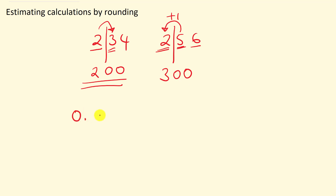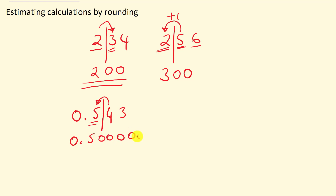Now let's look at some decimal examples. Say we have 0.543. The number starts with 0, so that is not a significant figure. Look at the next number after the decimal — we have a 5, which is our first significant figure. Draw the line after it. The number after the line is 4, which is 4 or less, so we don't add 1. The rounded number is 0.5. So 0.543 rounded to one significant figure is 0.5.